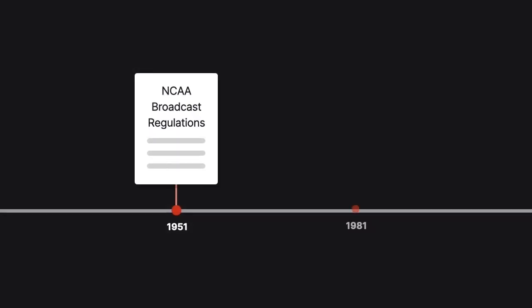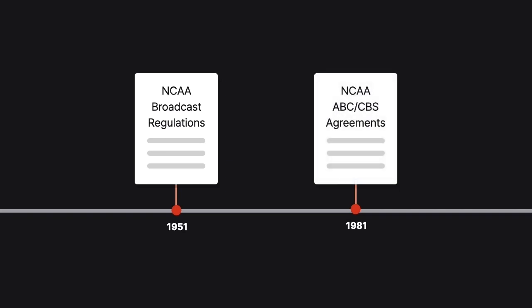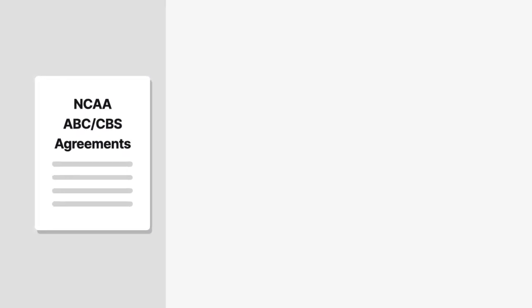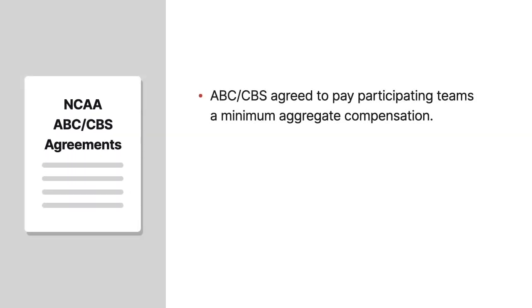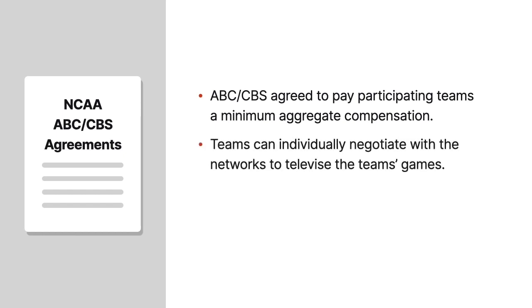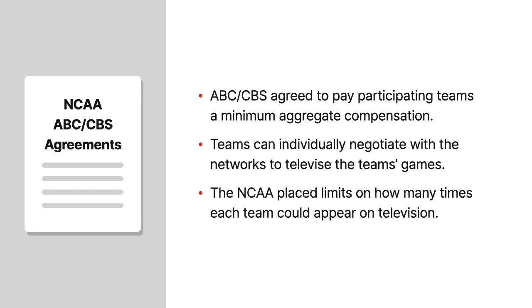In 1981, the NCAA entered into agreements that gave ABC and CBS exclusive broadcast rights for college football games during the 1982 to 1985 seasons. As part of the agreements, the networks agreed to pay participating teams a minimum aggregate compensation. Teams could individually negotiate with the networks to televise their games, but the NCAA placed limits on how many times each team could appear on television — for example, no more than six times every two years.